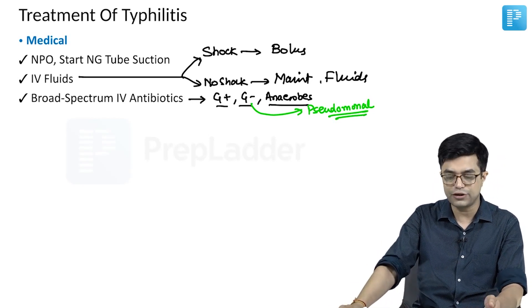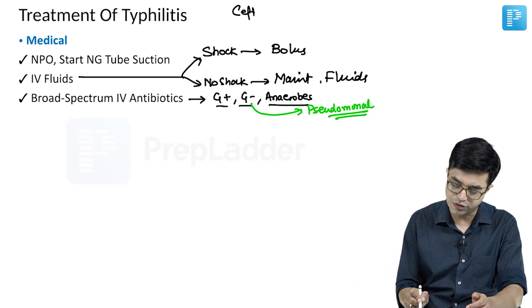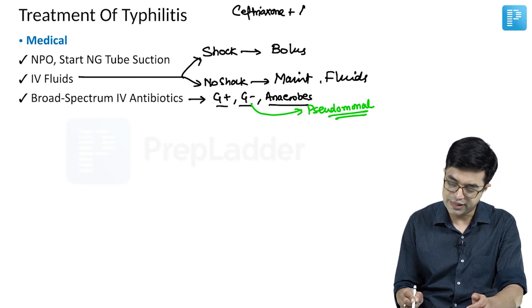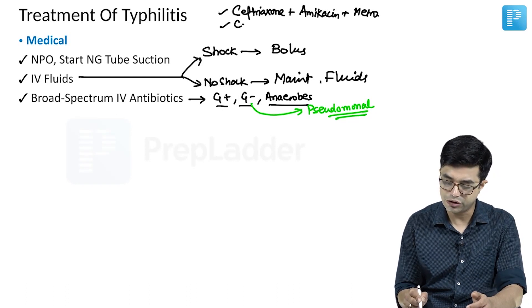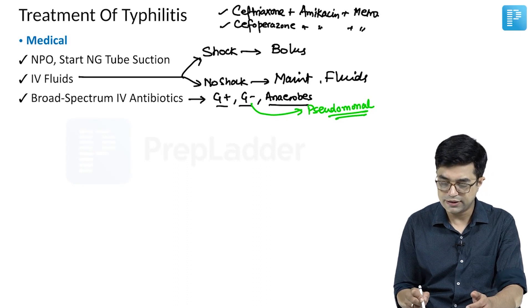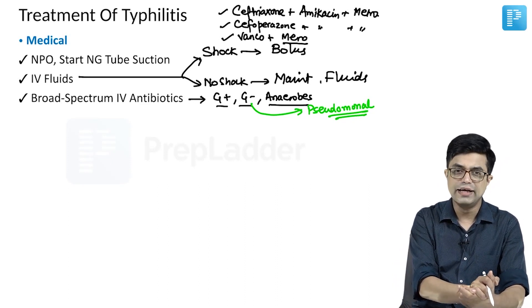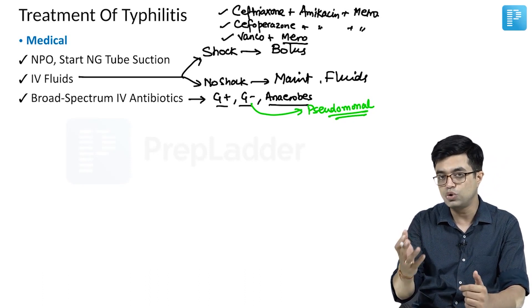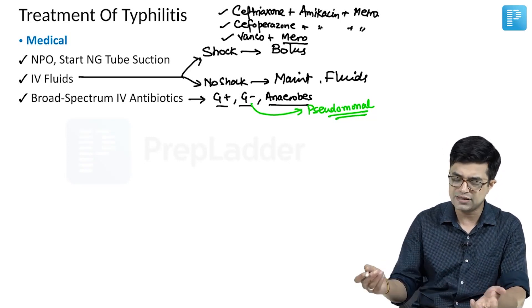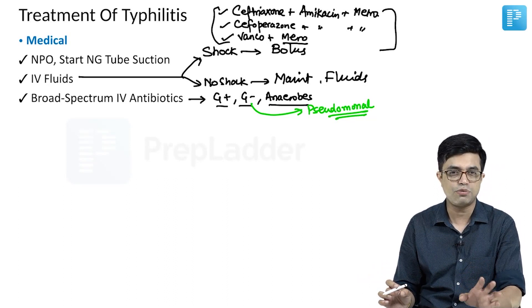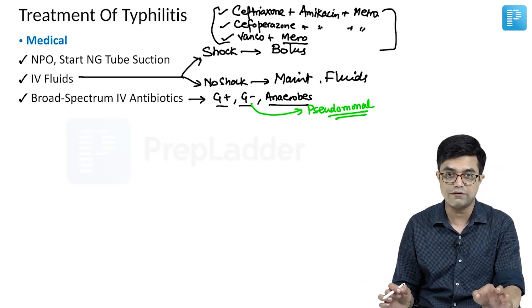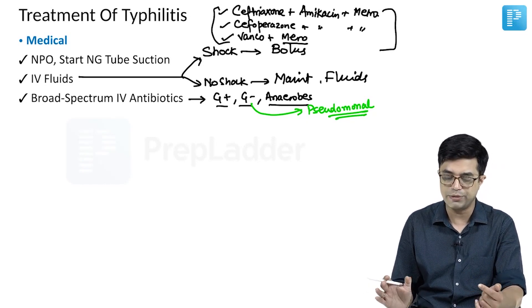Various antibiotic regimens are useful. Some places use a combination of ceftriaxone with amikacin and metronidazole. Others use cefoperazone with amikacin and metronidazole. A third regime becoming popular is vancomycin with meropenem — meropenem covers anaerobes and has pseudomonal activity. If there is strong suspicion of resistant Pseudomonal species, two anti-pseudomonal drugs of different classes can be combined. The rule is maximum organism coverage: gram-positive, gram-negative, pseudomonal, and anaerobic.